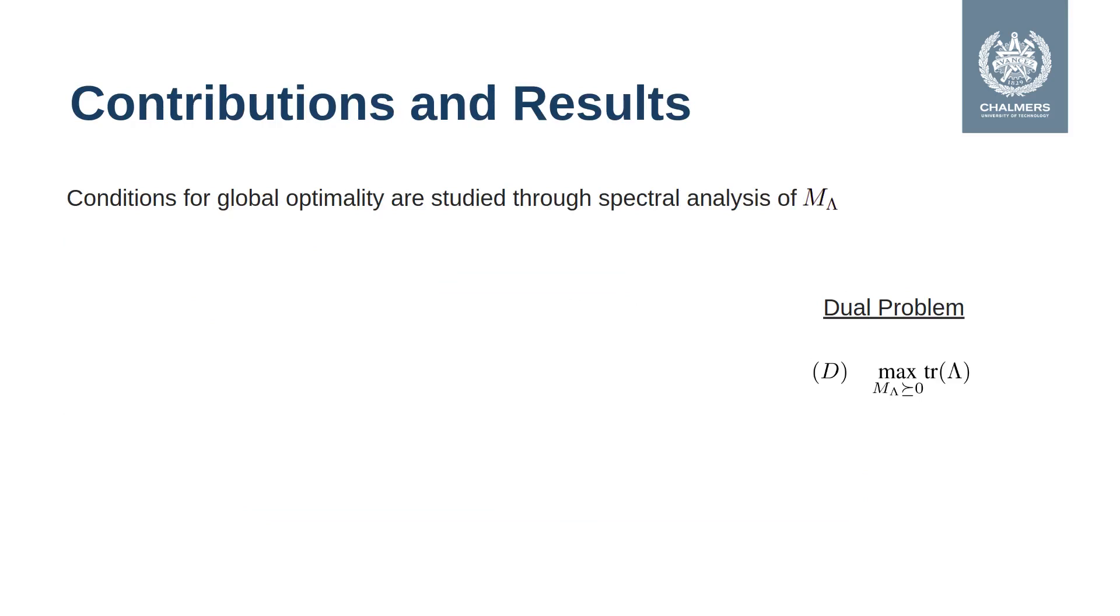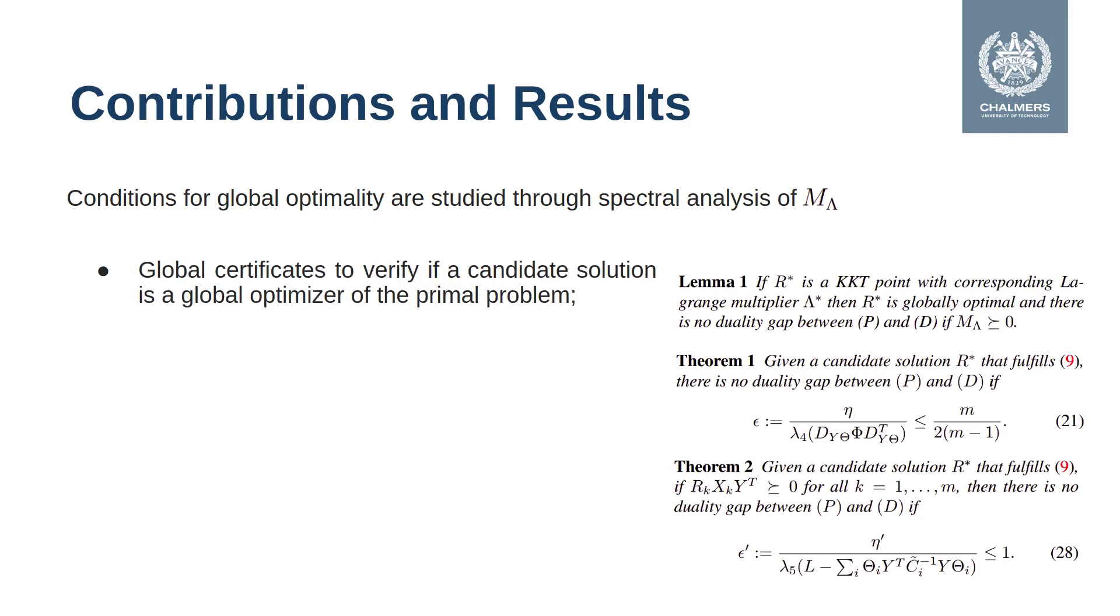This is done through a spectral analysis of the matrix M-Lambda, which allows us to obtain global certificates to verify if a candidate solution is a global optimizer of the primal problem.